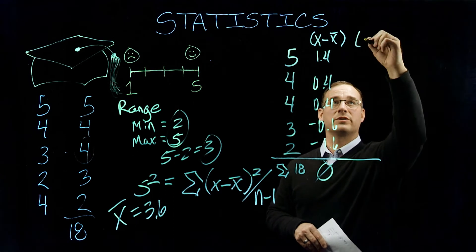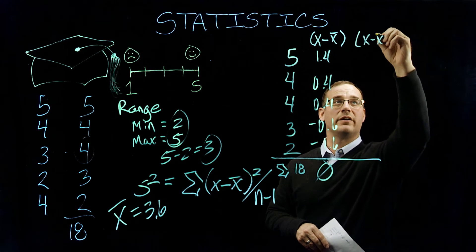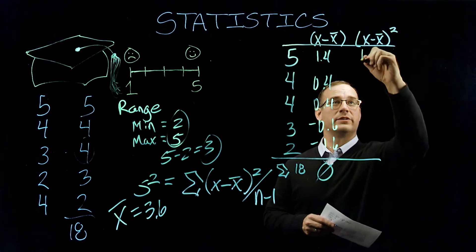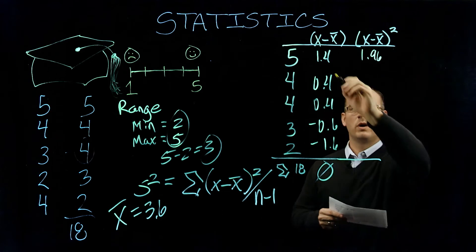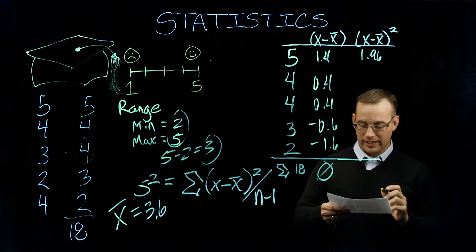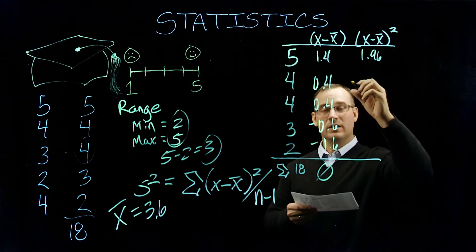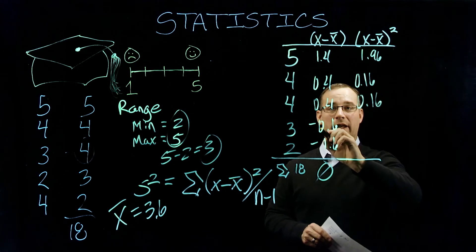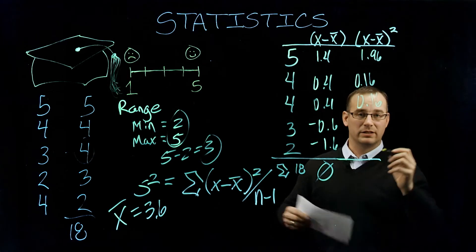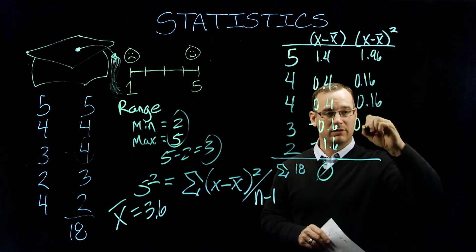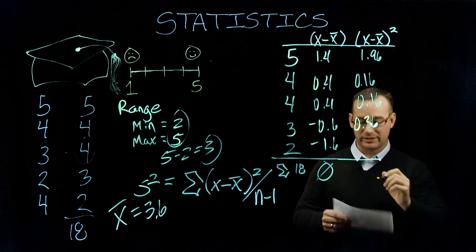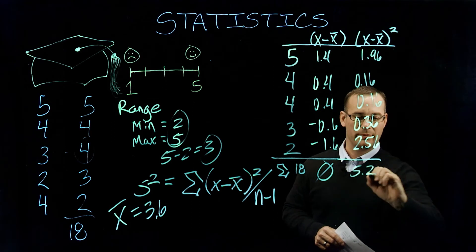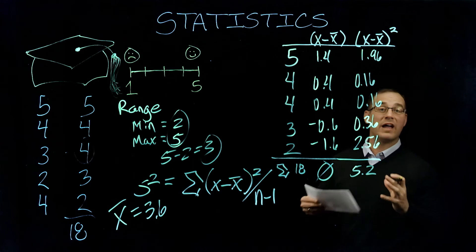And in our next step, we're just going to square each of these values. So the sum of the differences squared. And so here we're going to come up with 1.4 squared should be 1.96. 0.4 is 0.16. So 0.16. And our negative 0.6, a negative times a negative is going to be a positive. So 0.36, and then positive 2.56. If we add all of these values up, we should come up with 5.2.